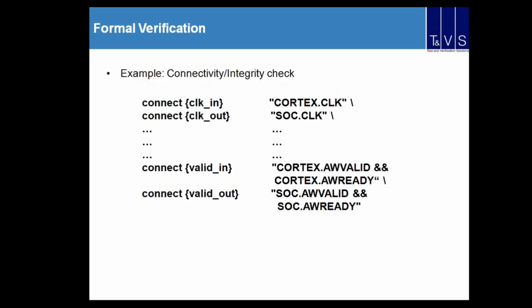For connectivity and integrity checks, consider an SOC with a protect boundary on the input and an SOC boundary on the output. We bind the protect clock on the input side and the SOC clock on the SOC boundary. For validity checks, we use AW ready and AW valid from the input side, then run the formal tool to check connectivity and integrity.